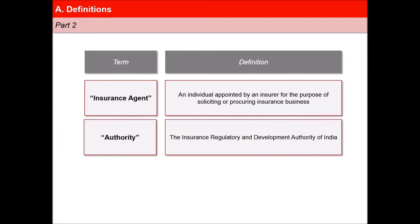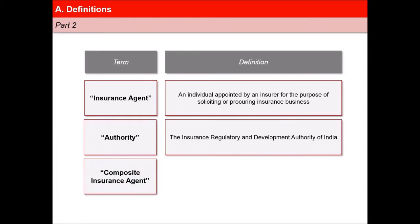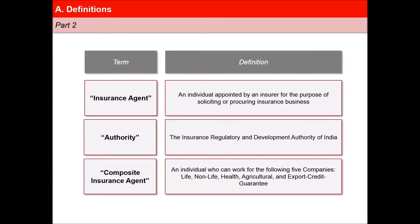'Authority' means the Insurance Regulatory and Development Authority. Sixth, 'Composite Insurance Agent' means an insurance agent who can work for the following five companies: Life, Non-Life, Health, Agricultural, and Export Credit Guarantee.